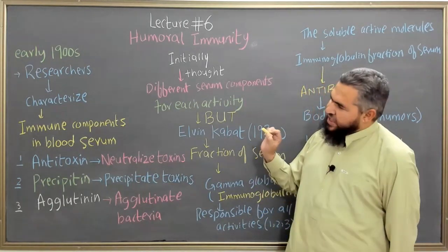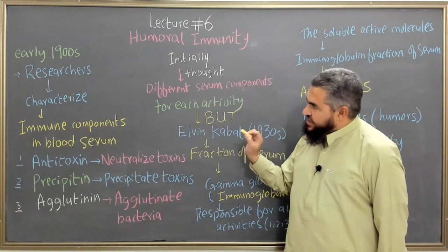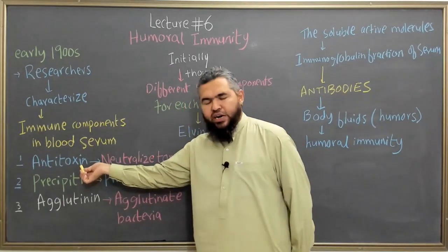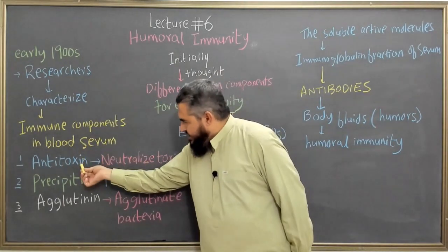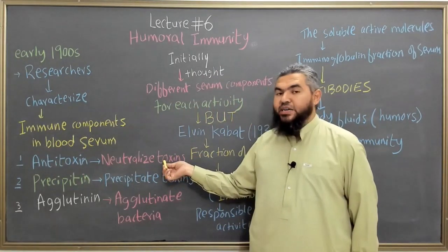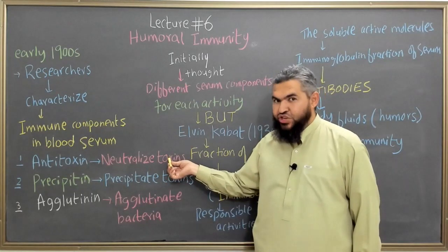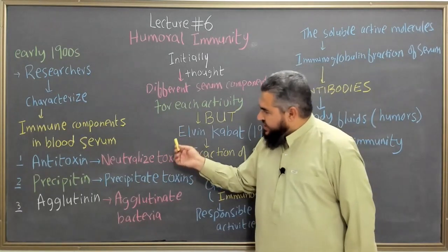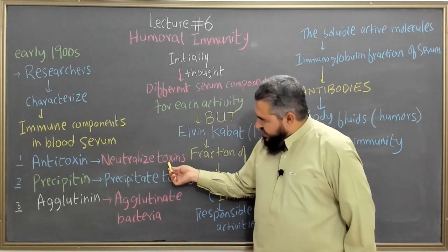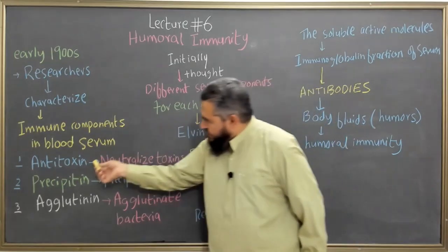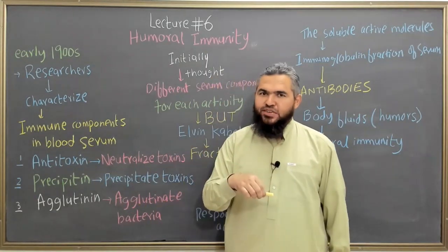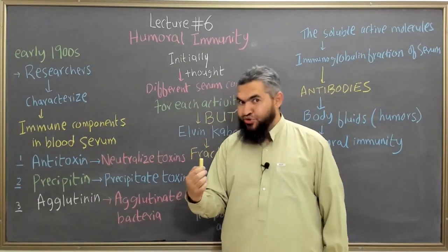One of the immune components in the blood serum that these researchers characterized was anti-toxins. They were calling them anti-toxins because these anti-toxins were able to neutralize the toxins produced by different pathogenic organisms. These immune components present in the blood serum were able to neutralize toxins, so they were called anti-toxins — which makes sense, because if you are neutralizing a toxin, the substance should be anti-toxin.